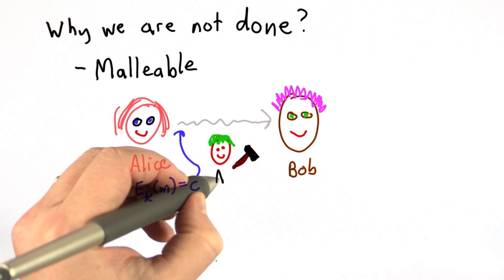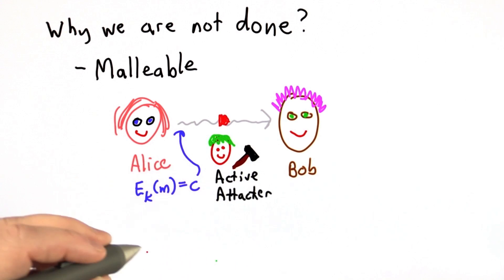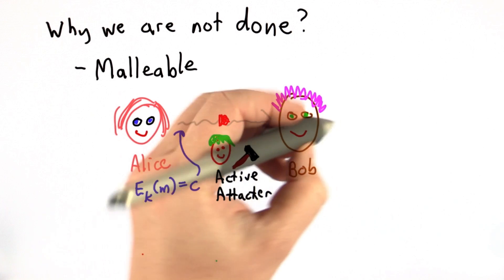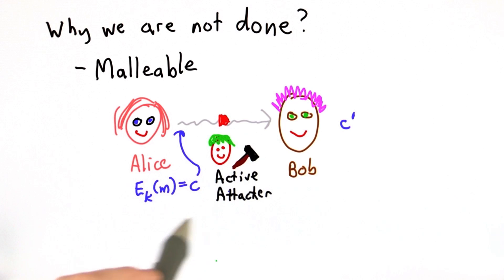And an active attacker means they can actually change messages on the network. So the message that arrives at Bob is not c, it's c prime. Because it's a perfect cipher, the attacker can't learn anything new about the message from c, but she could modify it.